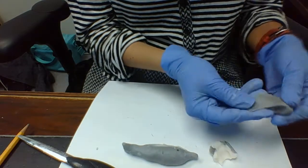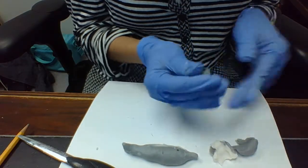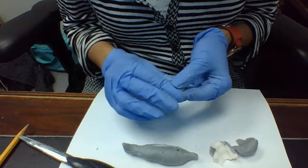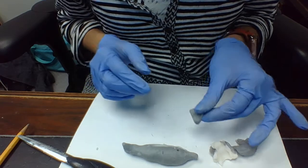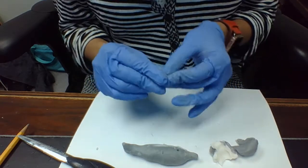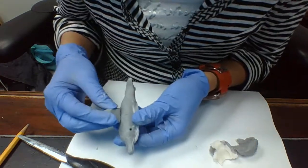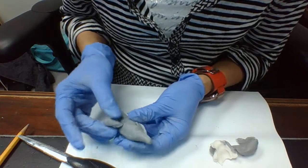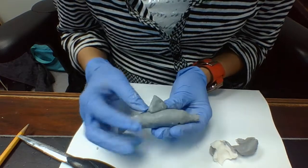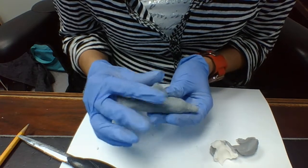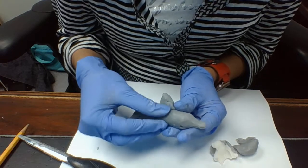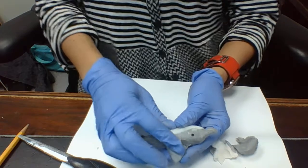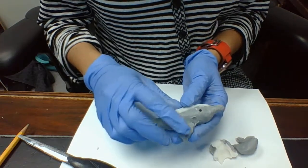With the extra gray soap dough I'm going to make the fin. And I'm just flattening this and making somewhat of a triangle with it. And I'm going to stick it, it has to be somewhat in the middle of the body. Now in here it doesn't look natural and that's okay. What you want to do is start smoothing it out on the side so that it merges to the body.